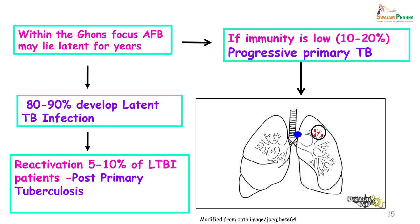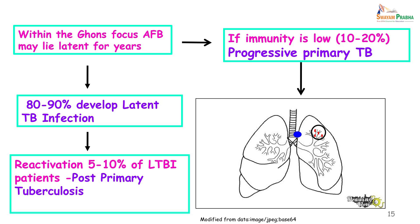If the regional lymph nodes have become enlarged, then together with this Ghon focus we call it a Ghon complex. The mycobacteria lie latent here, and this occurs in about 80 to 90 percent of individuals — all these people have latent TB infection. In about 5 to 10 percent of these patients, whenever their immunity drops, there is likely to be a reactivation of this focus, and then they suffer from what we call post-primary tuberculosis.